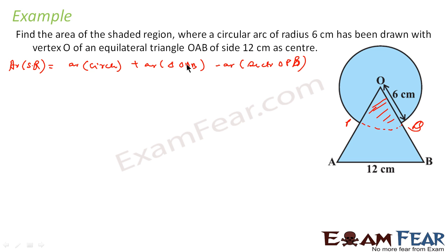If you take the area of the circle plus the area of the triangle, you see that the area of the sector is counted twice. Then you subtract this area of the sector once and you get the whole area of the figure.